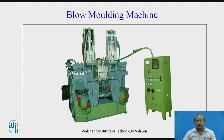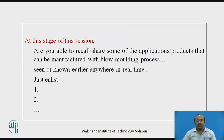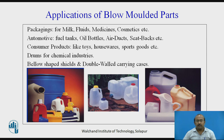The blow molding machine looks like this. At this stage, are you able to recall and share some of the applications or products that can be manufactured with the blow molding process? The applications of blow molded parts are: packaging, automotive, consumer products, drums for chemical industries, below-shaped shields and double-walled carrying cases, etc.